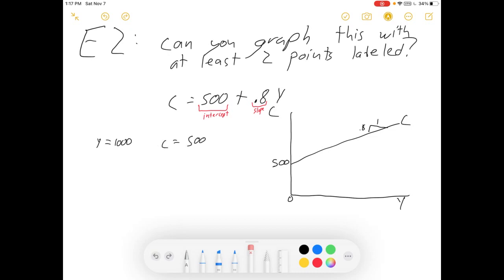So, if Y equals 1,000, I can find the C paired with 1,000, and that will give me a second point. If Y equals 1,000, then C equals 500 plus 800 is 1,300. Here, there's my Y of 1,000 is paired with a C of 1,300. And there's my second point.